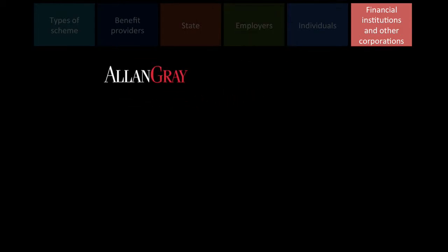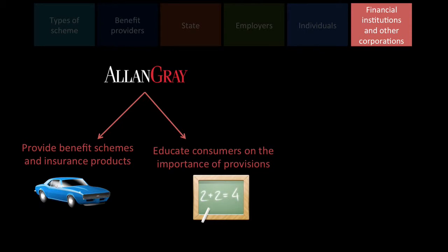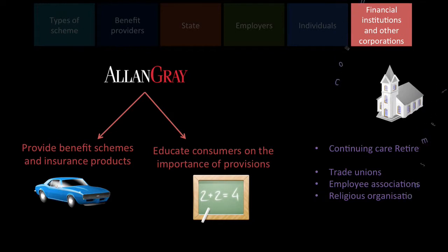Financial institutions and other corporations — a company like Allan Gray could provide the vehicle in which people save, and they like to educate consumers because the larger the financially aware population, the higher demand for their products. We also have other institutions such as continuing care retirement communities, trade unions, employee associations, and religious organizations — for example, the church can take care of people.